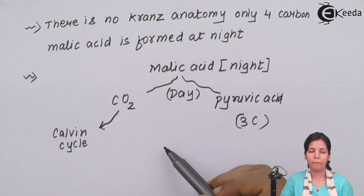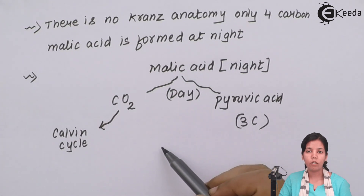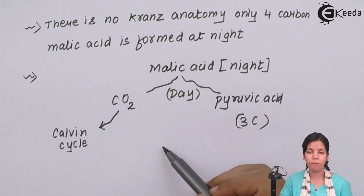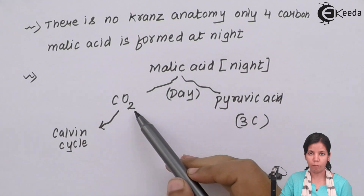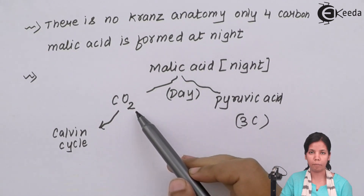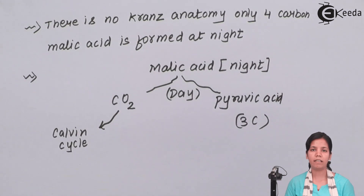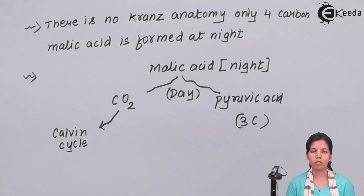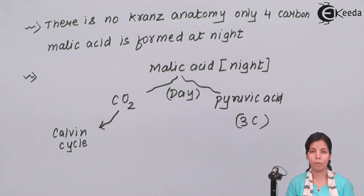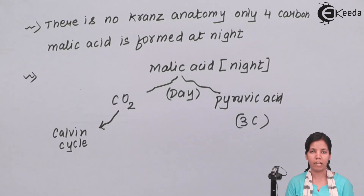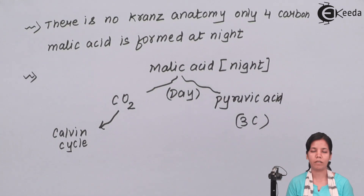Pyruvic acid is a stable three-carbon compound, and the carbon dioxide formed during this process is directed to the Calvin cycle or C3 cycle, and the Calvin cycle then starts. So in the CAM plant pathway we have seen that due to the closure of stomata, CAM plants follow this pathway, and once carbon dioxide is formed again the Calvin cycle begins. Basically in desert plants, the CAM pathway as well as the C3 cycle are both being used. I hope you are all clear with the concept of CAM pathway. Thank you.